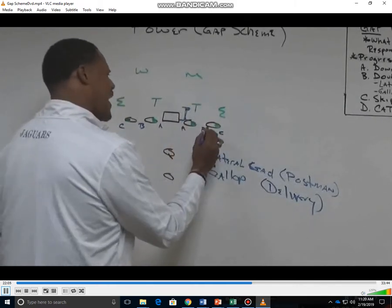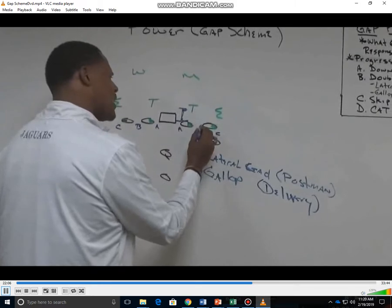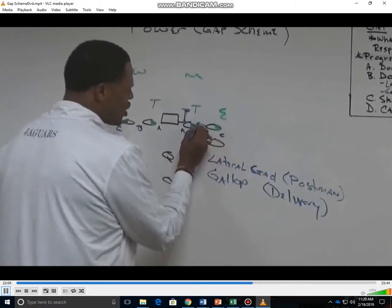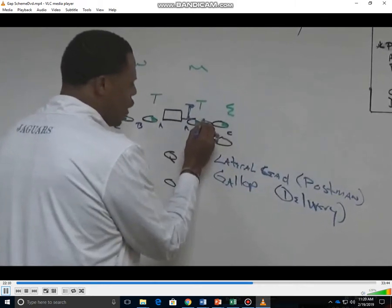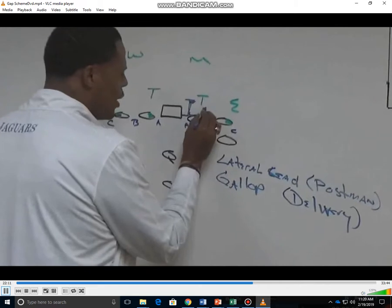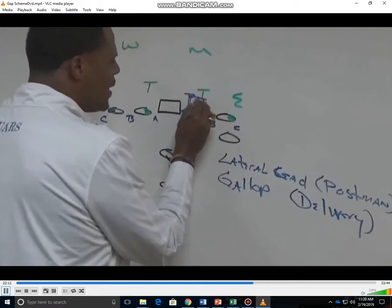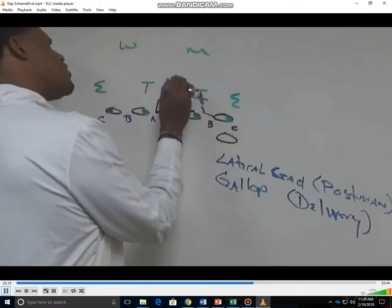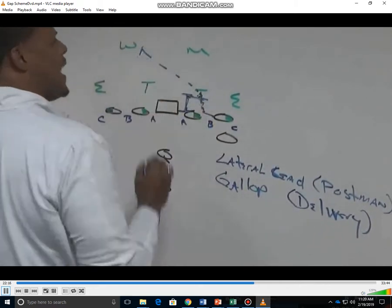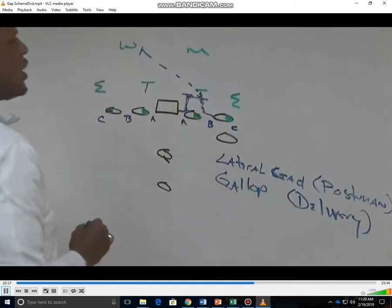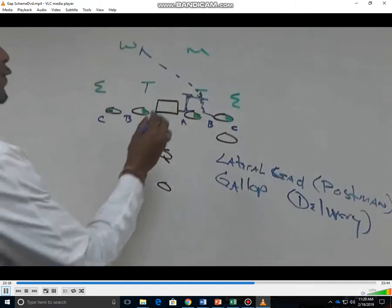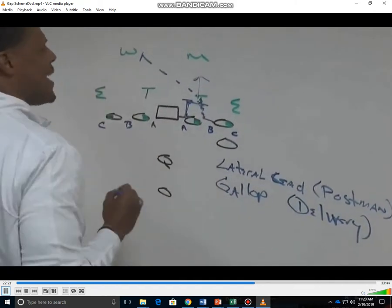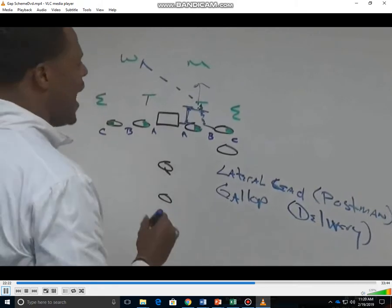The playside tackle is going to take what we call a gallop step, getting cheek-to-cheek. He takes five steps to double team to the backside linebacker. We want to emphasize getting vertical push at the point of attack to the backside linebacker.